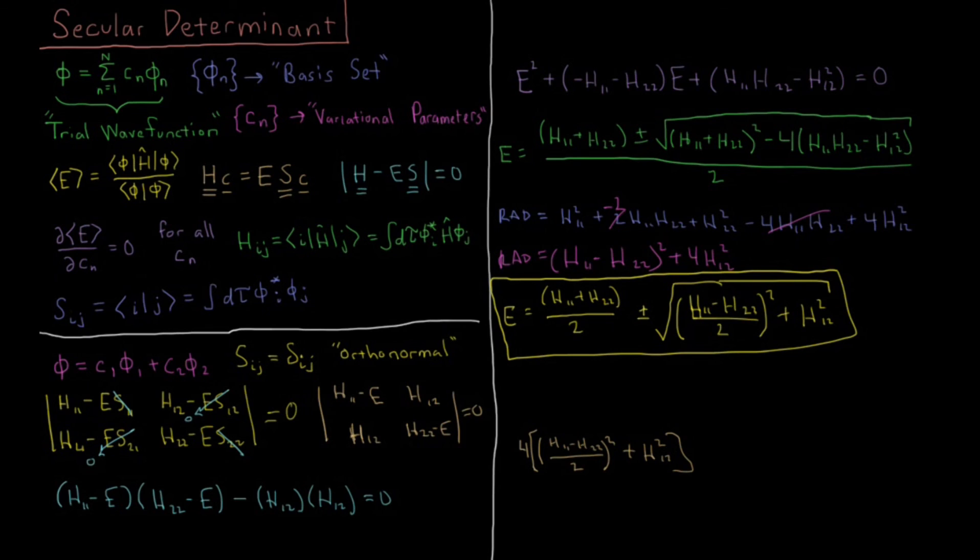And if we analyze these two terms, what we'll see is that (H11 + H22)/2 is the average of the energy of the two states. So if we have something like H11 is down here, and H22 is up here, this term that I have in cyan here is going to be the average in between those two.